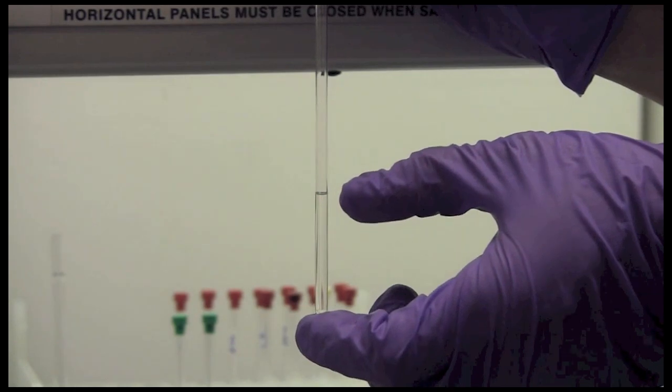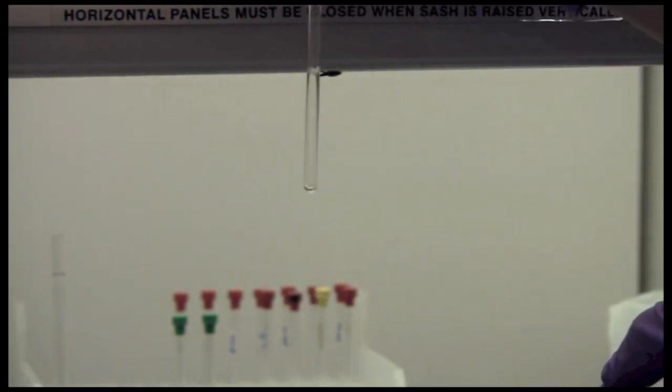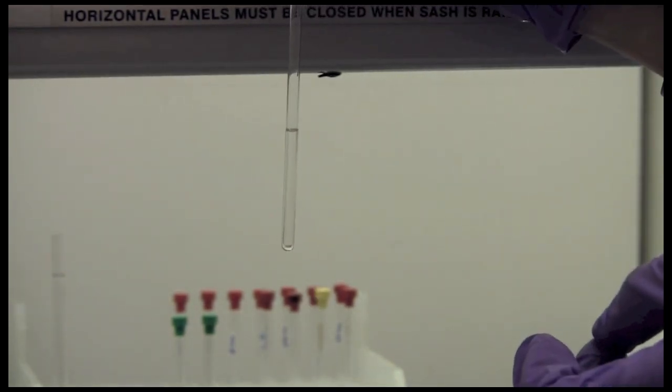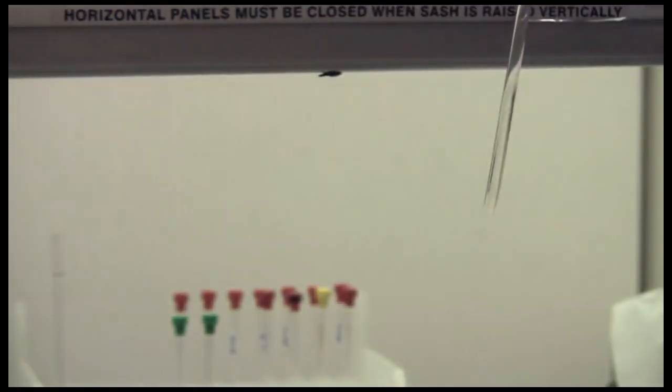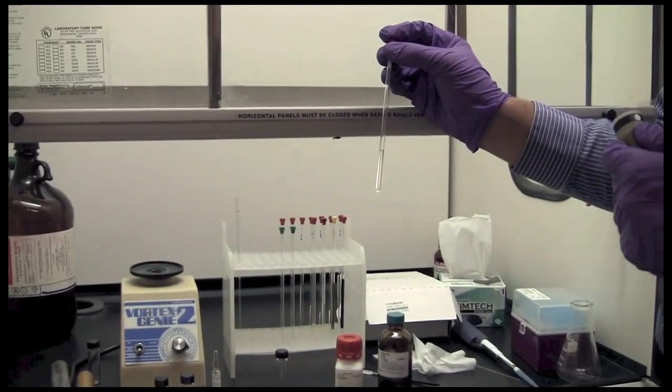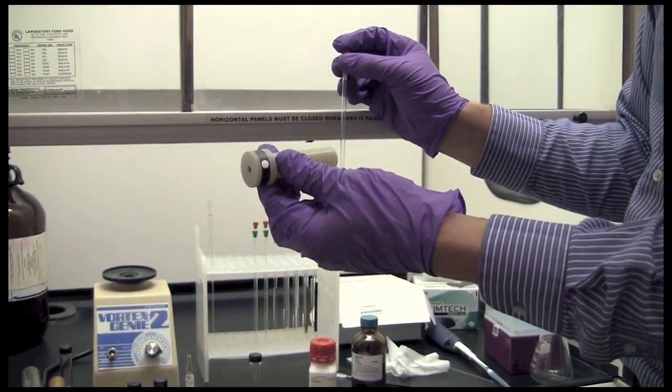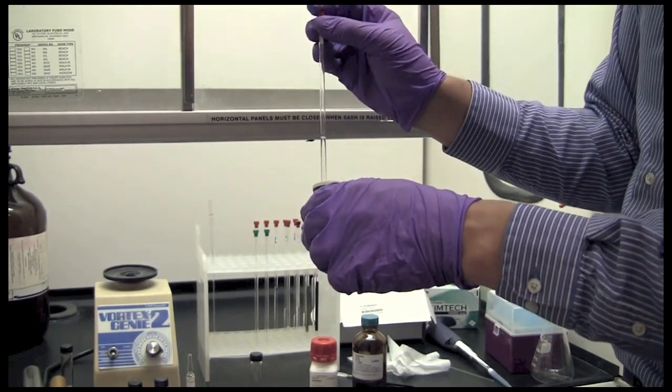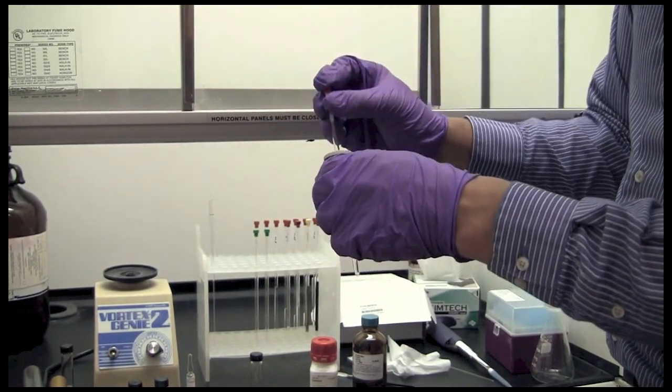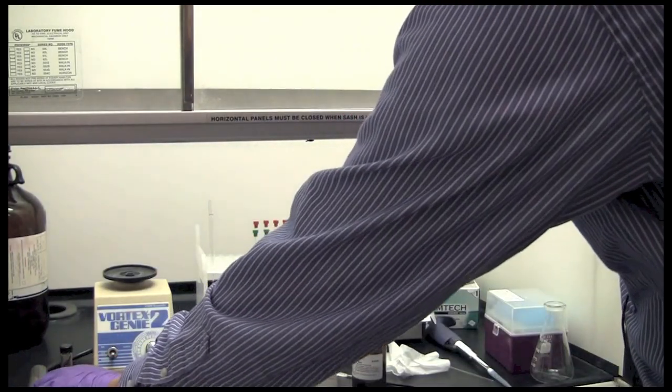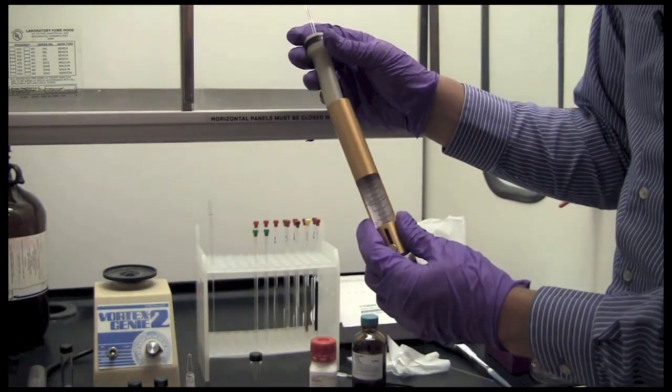About three to four centimeters is a good amount. The reason we need this height of sample is that we want the ends of the sample to be far away from the detection coil. So to see what I am talking about, I am going to put the sample into a spinner. In this case this is a Varian spinner. So I will put the tube into the spinner and then put it into the depth gauge to properly adjust the height.